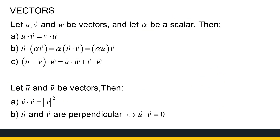Some properties of dot products: V dot U is the same as U dot V. U dot a scalar multiple of V is the same as that scalar multiple times U dot V. The dot product is distributive over addition. Also, the dot product of V with itself is the magnitude squared, which is easy to prove in R2 and R3. And U and V are perpendicular if and only if the dot product is 0 — that's what we looked at.